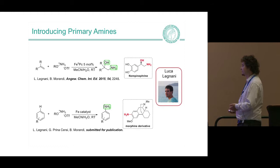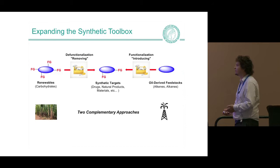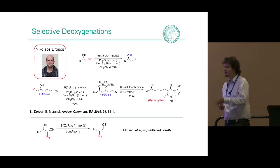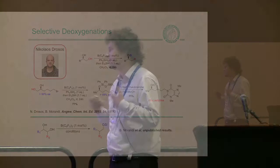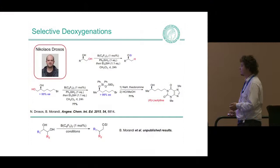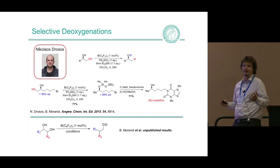One quick example of removing functional groups: Nikos, a great student from Greece and actually my very first PhD student, developed a range of transformations to selectively remove one hydroxyl group from a polyol derivative — very important in the context of using renewable feedstocks. More recently he also developed a reaction where you're not only removing a hydroxyl group, but at the same time rearranging the carbon-carbon backbone of the molecule, which is a pretty exciting organic transformation.